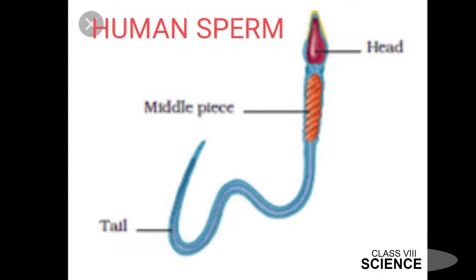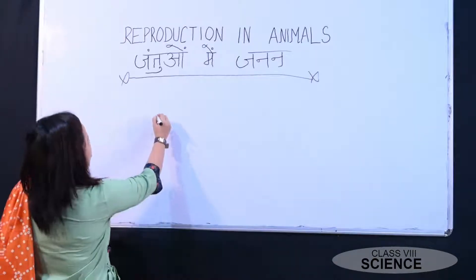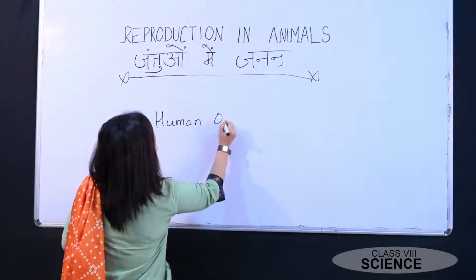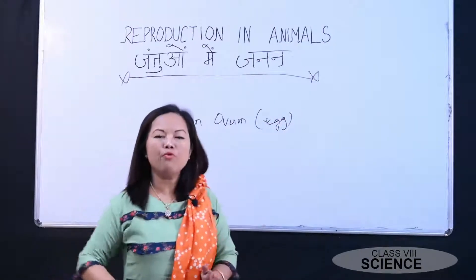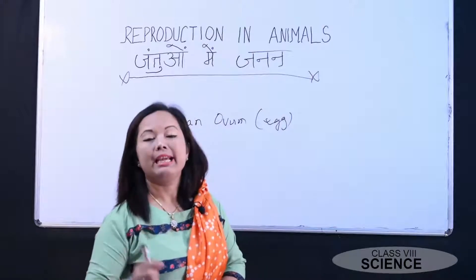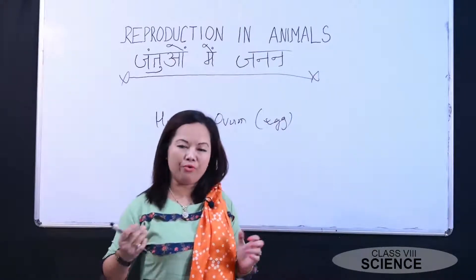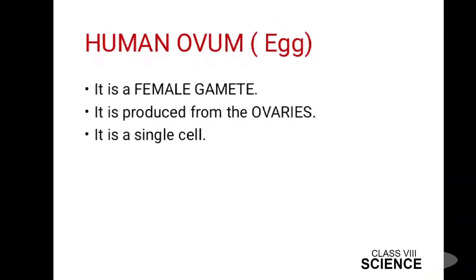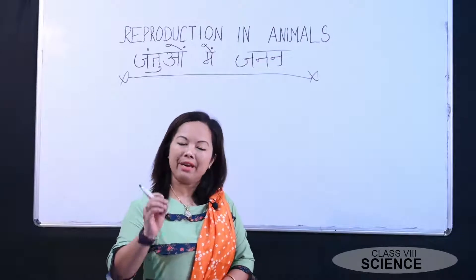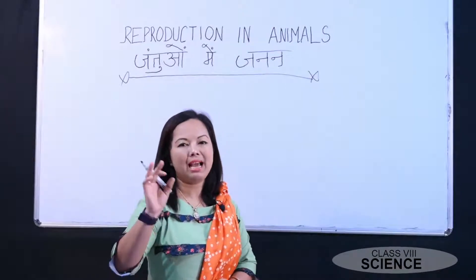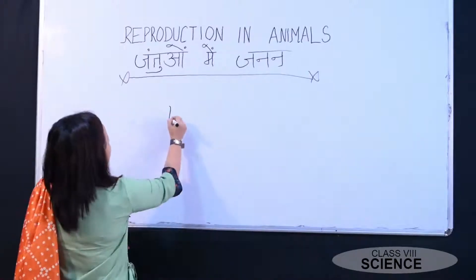Now we'll talk about the human ovum or egg cell. Human ovum is the female gamete — it is a single cell and it is produced from the ovaries. Now we have seen the two gametes — the male gamete and the female gamete. Next we'll talk about fertilization.